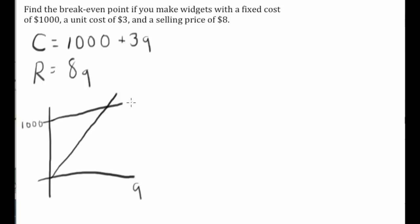Where that occurs, let's label these. Let's see. That's R. Where that occurs is our break-even point.